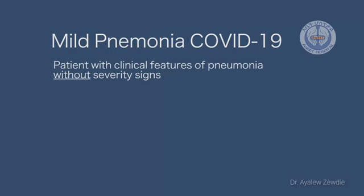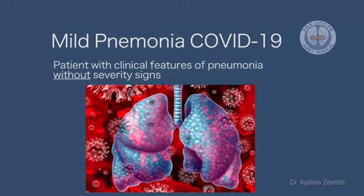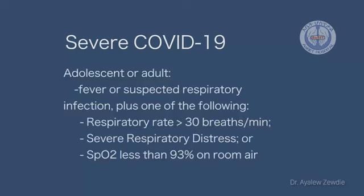The next classification is mild pneumonia: the patient has typical features of pneumonia but does not have severity signs. For severe COVID-19, the patient has fever with respiratory infection plus one of the following: respiratory rate more than 30, severe respiratory distress, or oxygen saturation less than 90% on room air as signs of severity.